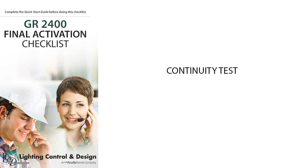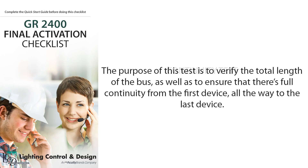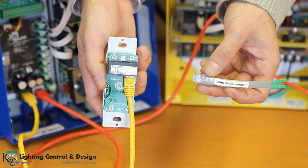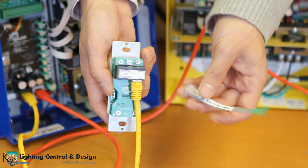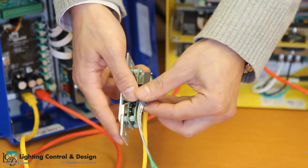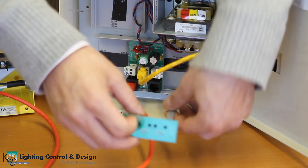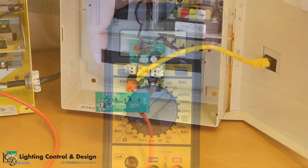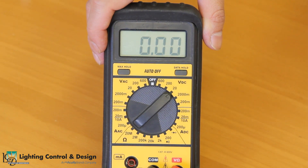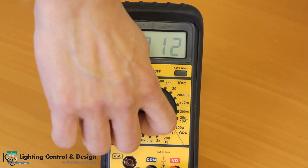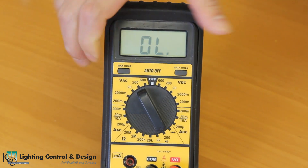The first test we are going to perform is the continuity test. The purpose of this test is to verify the total length of the bus, as well as to ensure that there is full continuity from the first device all the way to the last device. The first step is to plug in the data power jumper into the last device, then plug in the bus checker card into the first device. Set your multimeter to the 200 ohm or equivalent range, and measure resistance across the following terminals on the bus checker card.